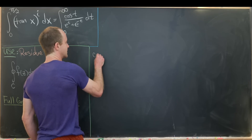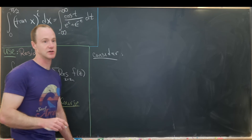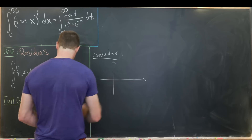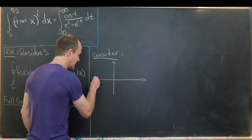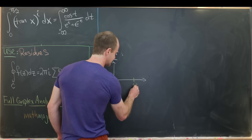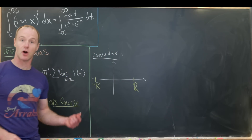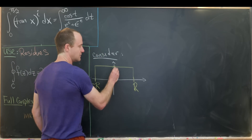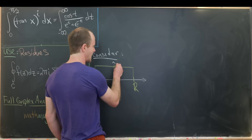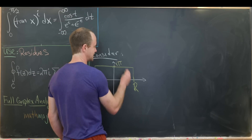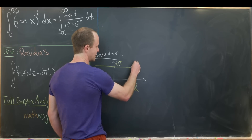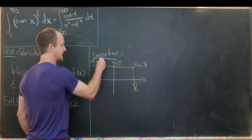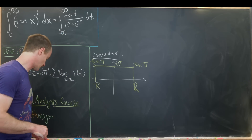We consider a rectangular contour in the complex plane. The real part runs from −R to +R, and we'll eventually take R → ∞. The rectangle goes straight up to a height of π, so the corners are at R + iπ and −R + iπ, giving us a rectangular region.